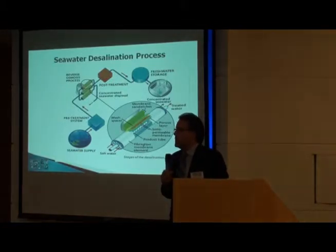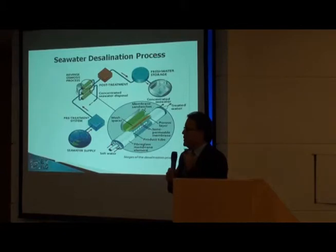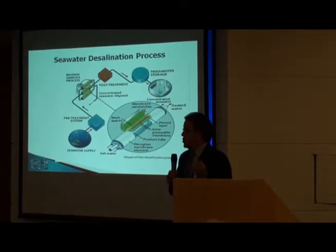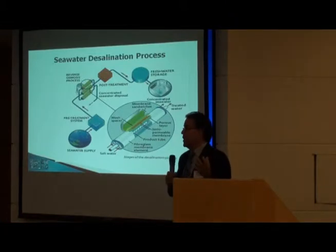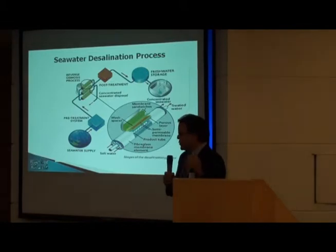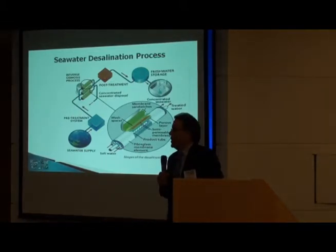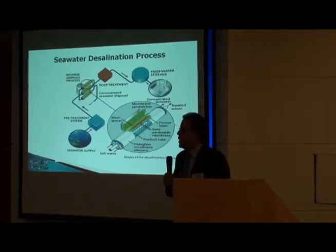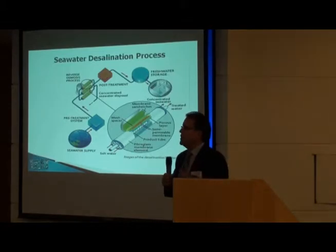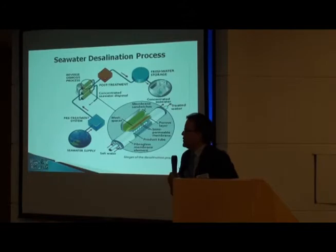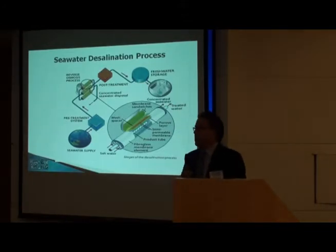That water, devoid of any suspended particles, then moves into the reverse osmosis membrane process where the salts can be separated from the water. The process requires a significant amount of pressure — in order to reverse the natural process of osmosis, you need to pressurize the water to over 1,000 pounds per square inch. It then forces the water molecules through the membrane. When it comes out, it is almost pure water, so we need to add some minerals back and condition it before it goes out into the distribution system, as you can see in the graphic.